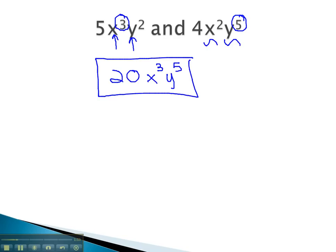The least common denominator or least common multiple of 5x cubed y squared and 4x squared y to the 5th will be 20x cubed y to the 5th.